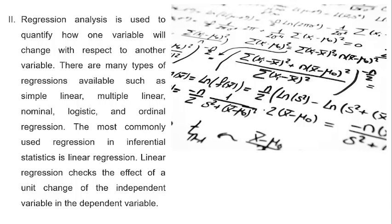The second type of inferential statistical tools is regression analysis, which is used to quantify how one variable will change with respect to another variable. There are different types of regression analysis available such as simple linear, multiple linear, nominal, logistic, and ordinal regression.